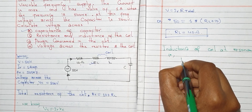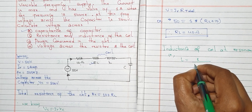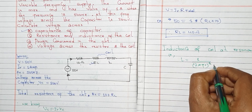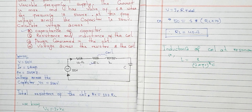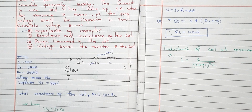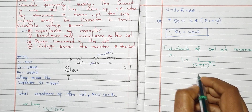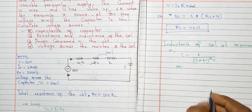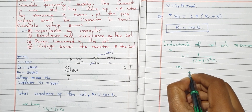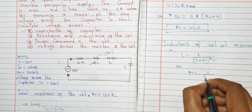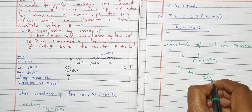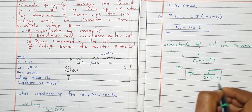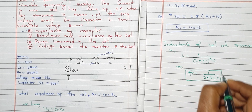L is equal to 1 divided by 2π f_R, which is equal to 1 divided by 2π times the square root of LC. You can directly apply this formula and modify it.